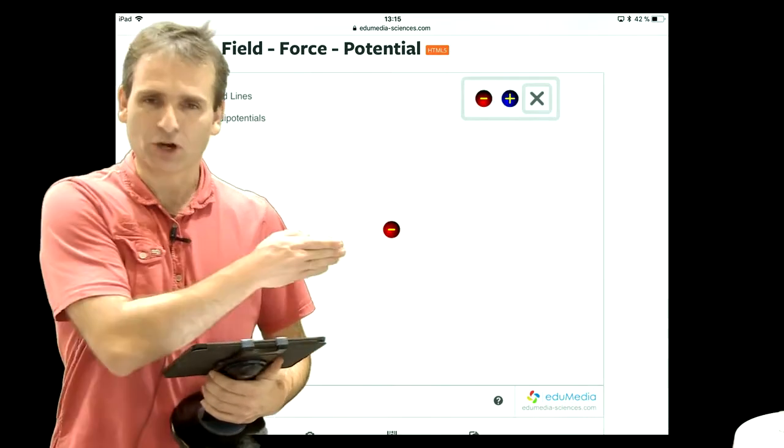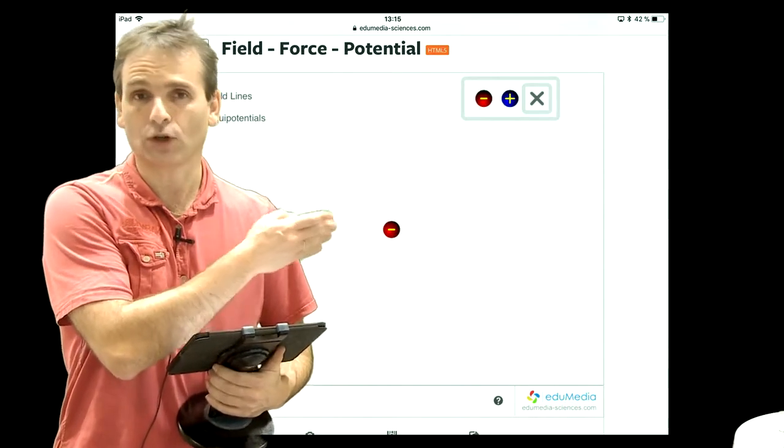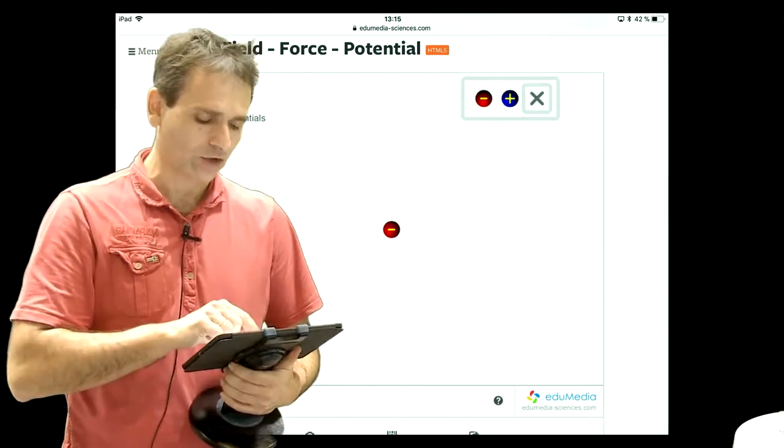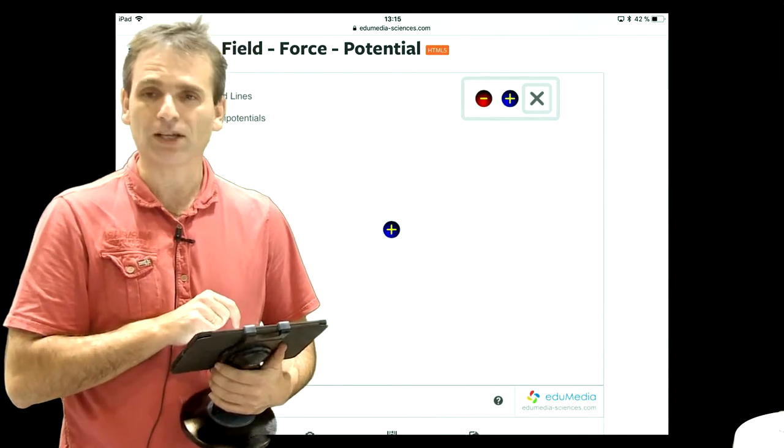Actually, here is a charge. Electric charge, a dot charge, is plus or minus. I can change the sign by clicking on it.